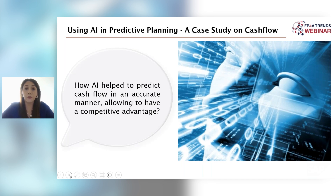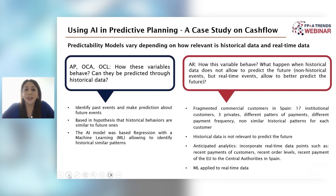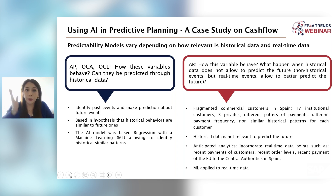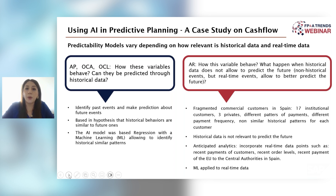On the next slide we have two buckets of variables. The AP, OCA, and OCL are very predictable with historical data. For this type of variable, you search for historical data and build a model with the data scientists. At the time, linear regression helped us predict these fairly easily — you go into your historical data to project the future.